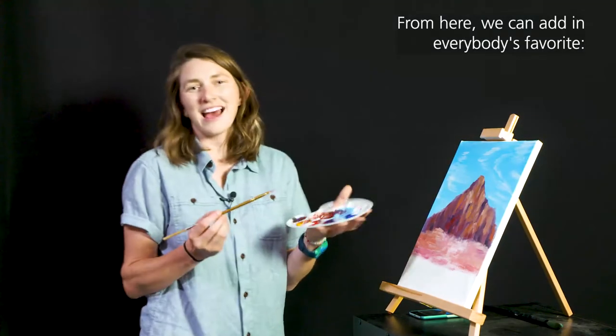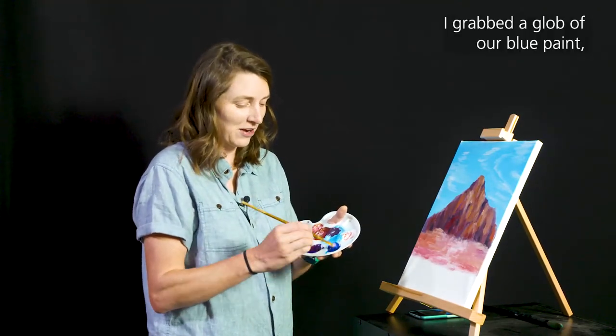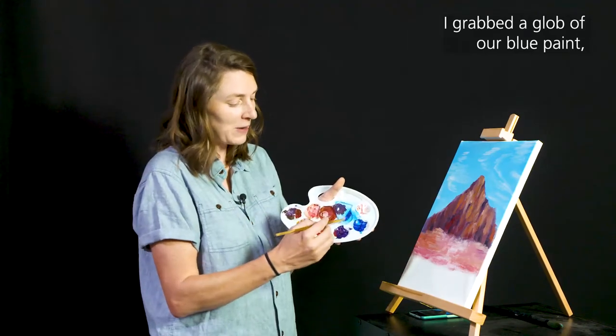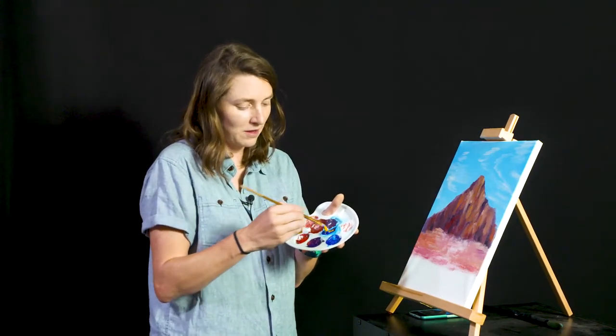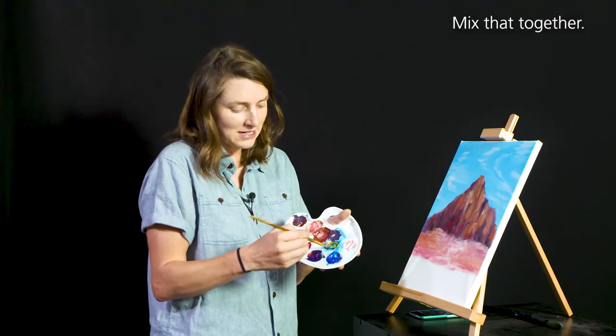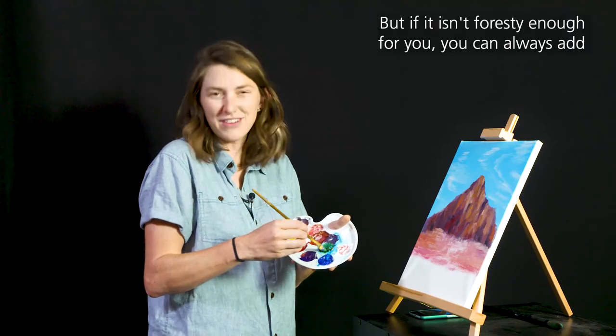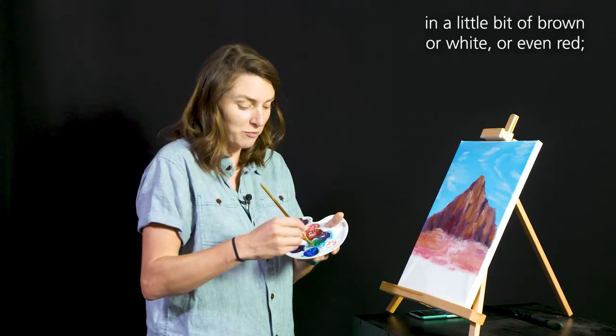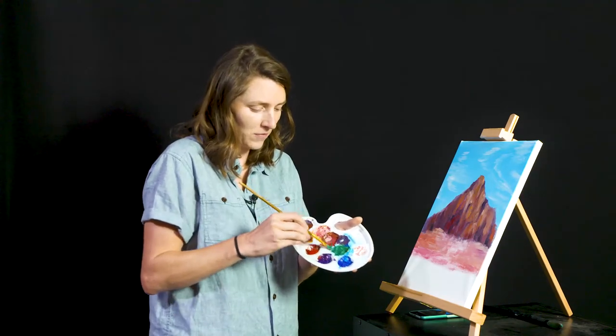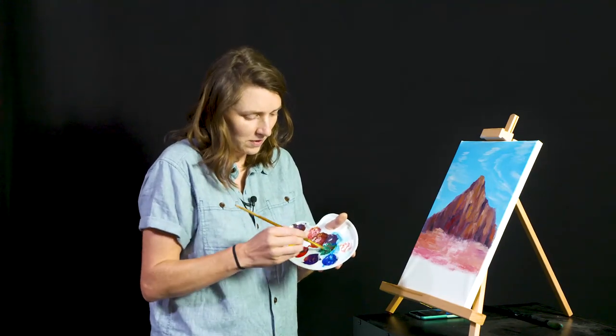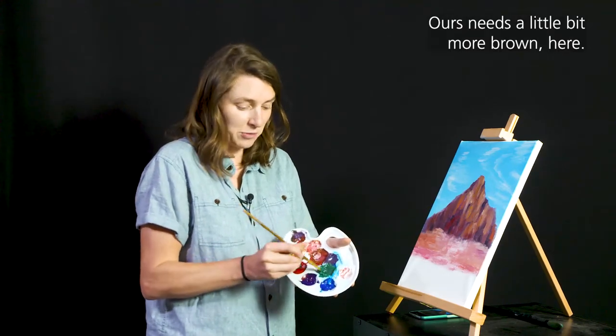From here, we can add in everybody's favorite happy little trees all along our hillside. We're going to grab a glob of our blue paint and then a whole bunch of the yellow paint. Mix that together. It should make a nice foresty green. But if it isn't foresty enough for you, you can always add in a little bit of brown or white or even red. Whatever you feel like it needs. Ours needs a little bit more brown here.